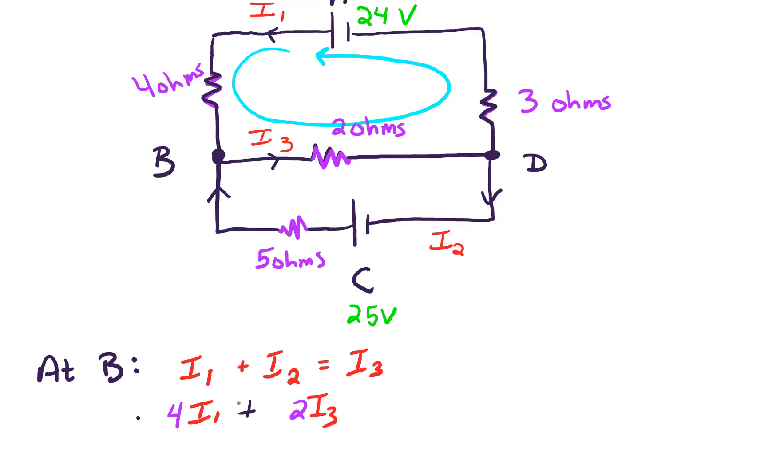And then going back up this other side, we've got 3 ohms, and that's times I1. And that has to equal the voltage, which is 24 for that top loop.